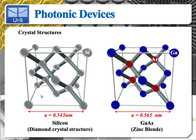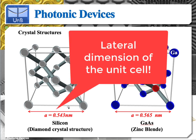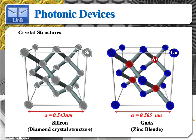Let's consider silicon, for example. Silicon has a lattice constant of 0.543 nanometers — 5.43 angstroms — which is the lateral dimension of the crystal cell. And aside from having eight atoms right at the vertices and six atoms at the faces, which you can see right here, it has four additional atoms — this one right here, this one back here, this one back here, and this one right here.